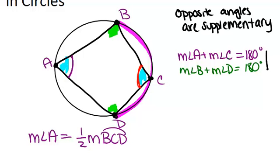Now for angle C, angle C is also an inscribed angle and the arc that it intercepts is arc BAD. So that means that the measure of angle C equals one-half the measure of arc BAD.